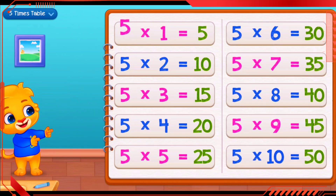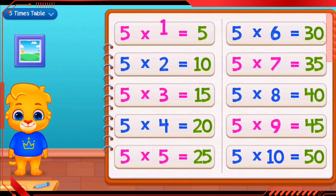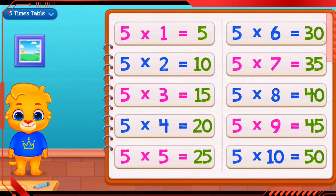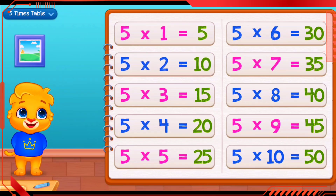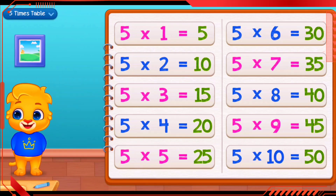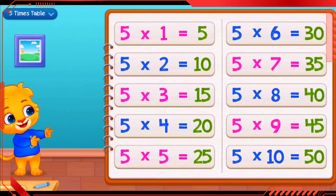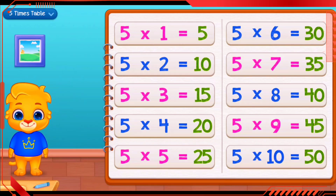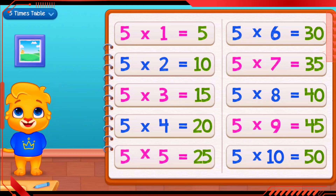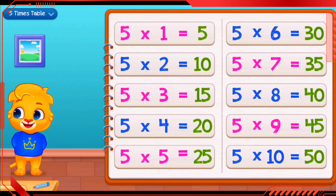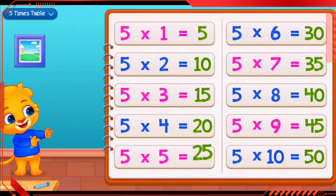5 times 1 equals 5. 5 times 2 equals 10. 5 times 3 equals 15. 5 times 4 equals 20. 5 times 5 equals 25.